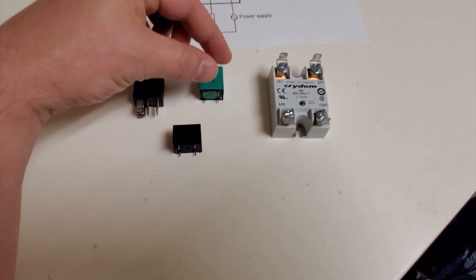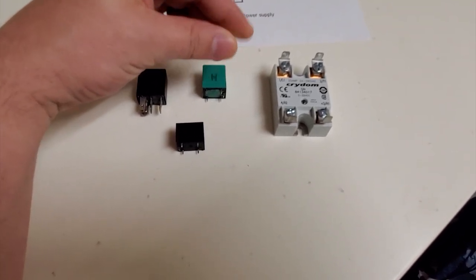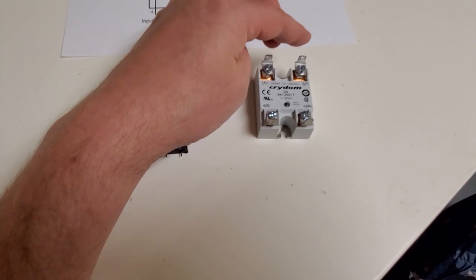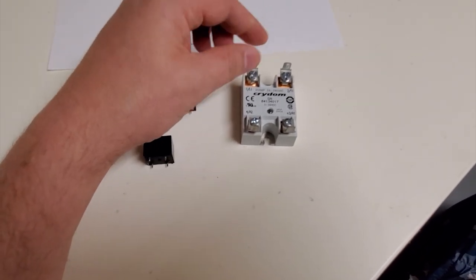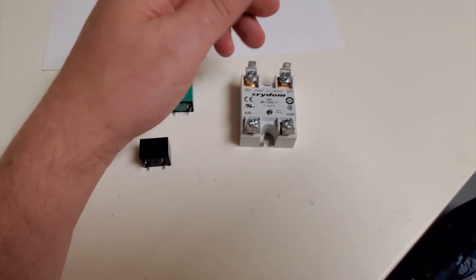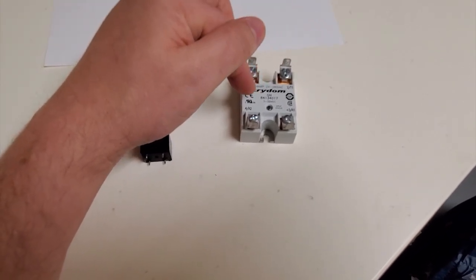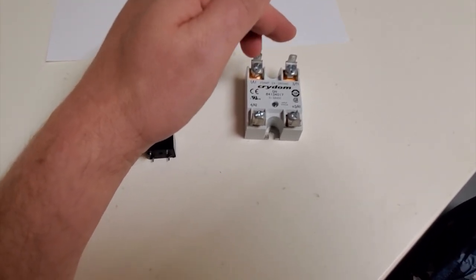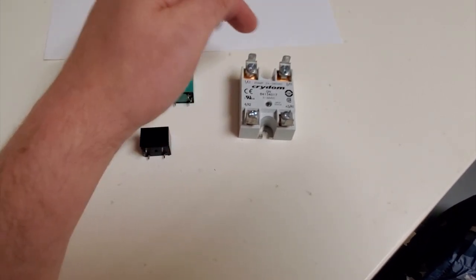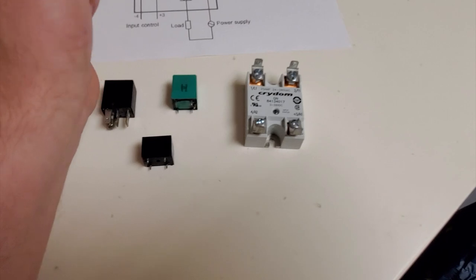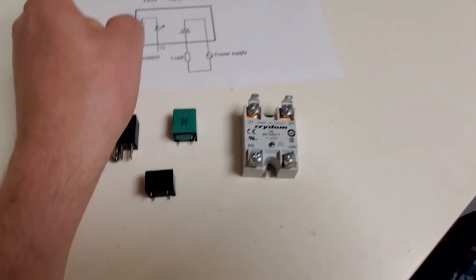So when you're checking this side to see if it's active, then what you would do is you'd put it on voltage, AC voltage, and you would check it. And there should be only one to two volts difference between these two pins. And that is how you know if it's actually turning on your load or not.